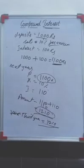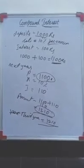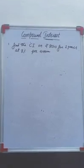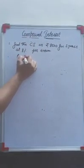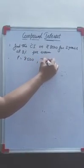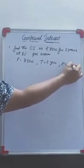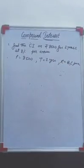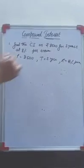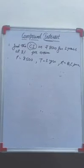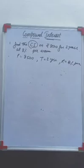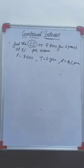Let us take an example. Find the compound interest on 8500 rupees for 2 years at 8% per annum. So over here, your principal is 8500, time is 2 years, and rate is 8% per annum. You need to calculate compound interest. Without formula, I am going to calculate the compound interest.